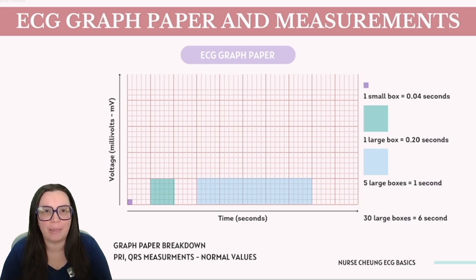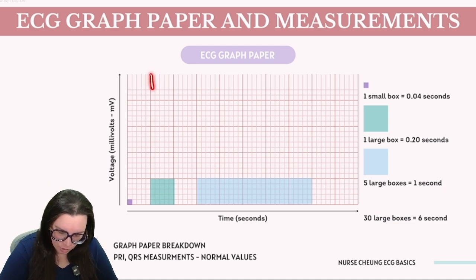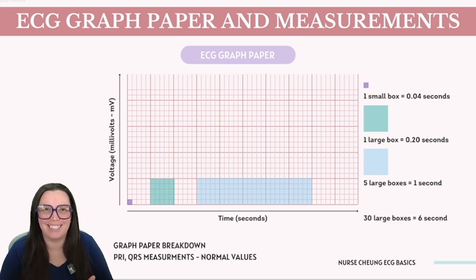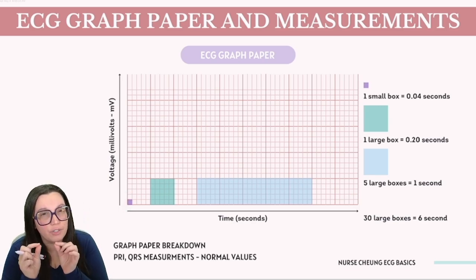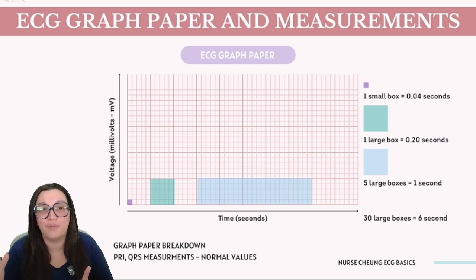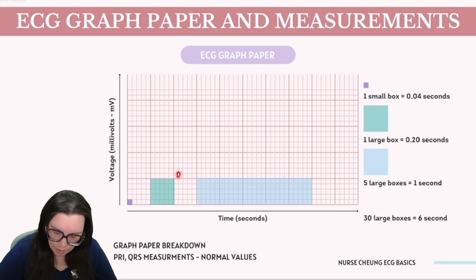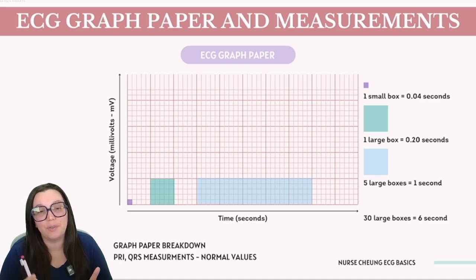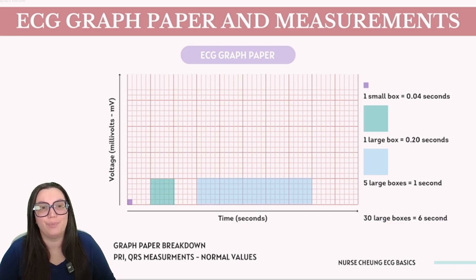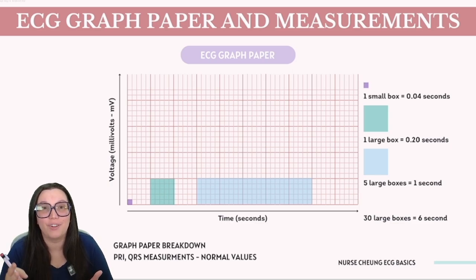Let's take a closer look at ECG graph paper. Each strip is divided into large squares, as indicated by the darker lines on the strip, and each large square contains five smaller boxes. One small square equals 0.04 seconds. Since large squares are comprised of five small squares, a single large square represents 0.20 seconds. Five large squares together amount to one second — five times 0.20 gives us one second — and this helps us time cardiac events accurately.